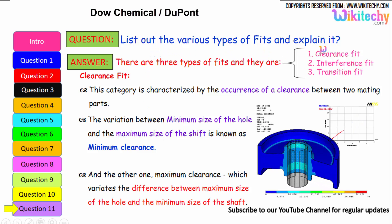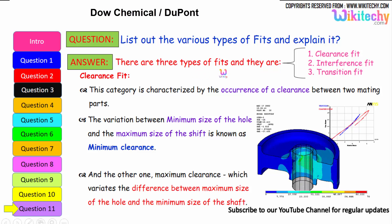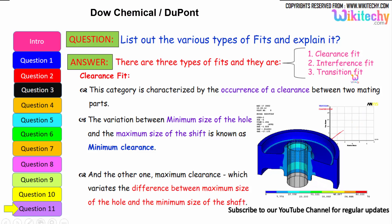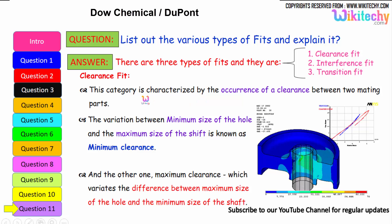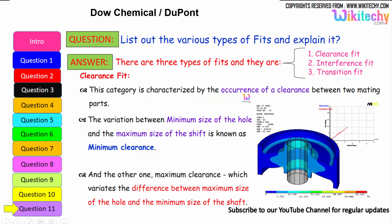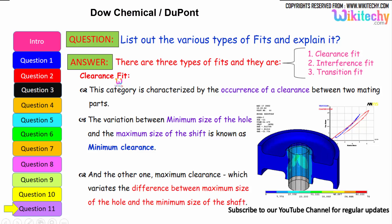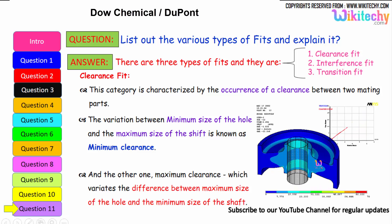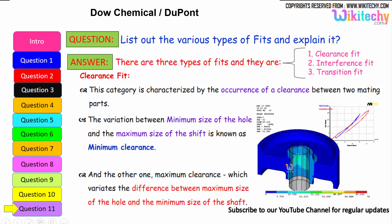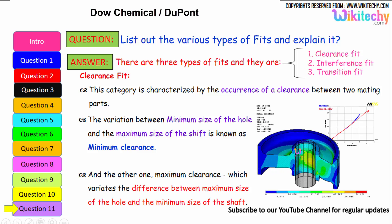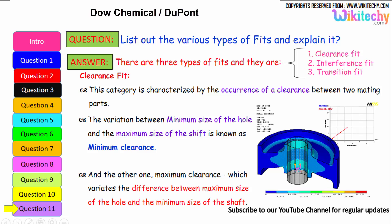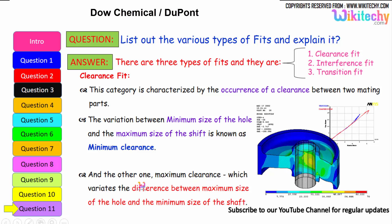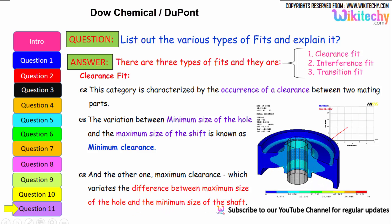List the various types of fits and explain them. There are three types of fits: clearance fit, interference fit, and transition fit. Clearance fit is characterized by the occurrence of clearance between the two mating parts. The difference between the minimum size of the hole and the maximum size of the shaft is known as minimum clearance, while maximum clearance is the difference between the maximum hole size and minimum shaft size.